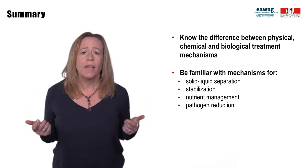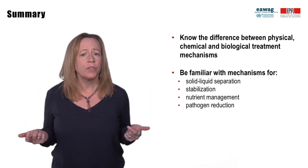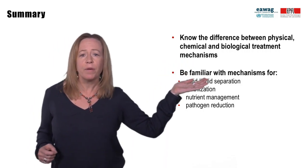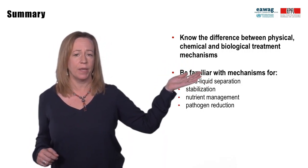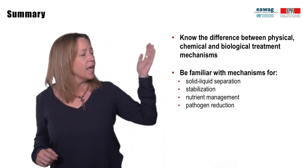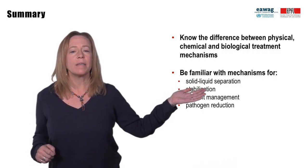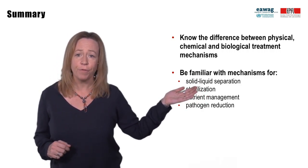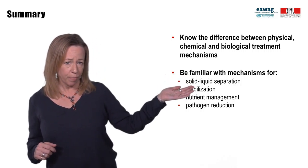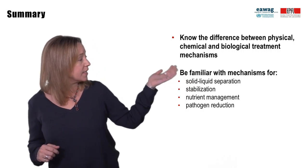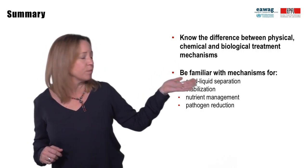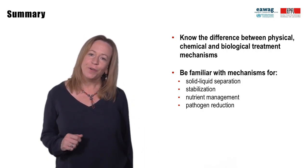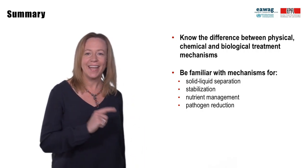In summary, in this module you learned about physical, biological, and chemical mechanisms that occur in treatment processes, and about treatment mechanisms occurring during four treatment objectives for fecal sludge: solid-liquid separation, stabilization, nutrient management, and pathogen reduction. Thanks for joining — see you next time!